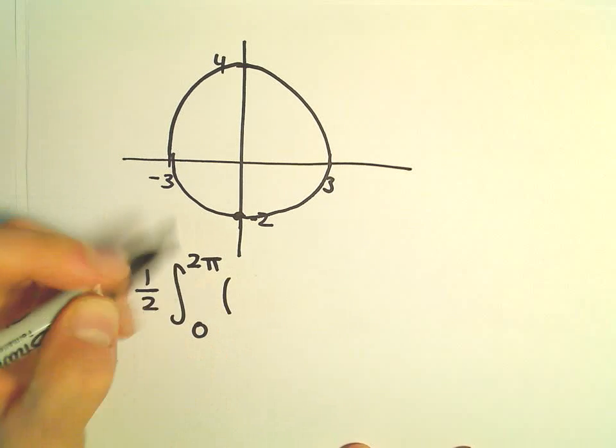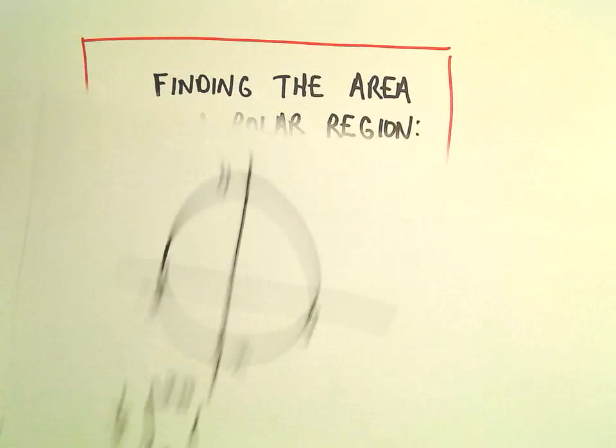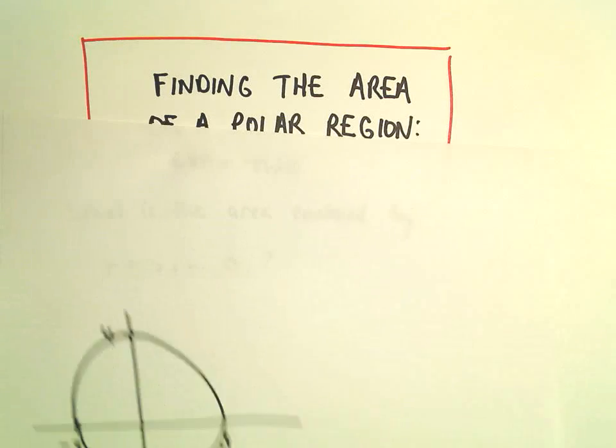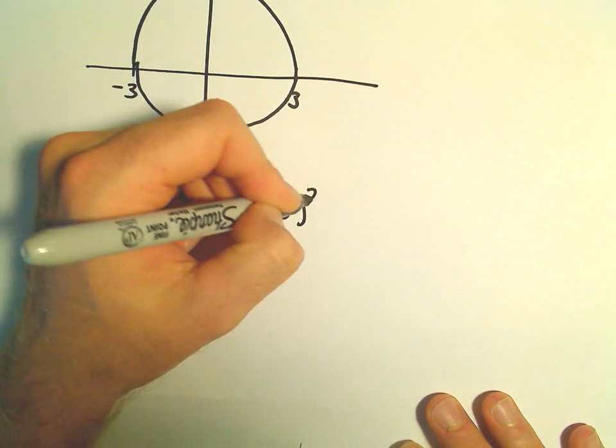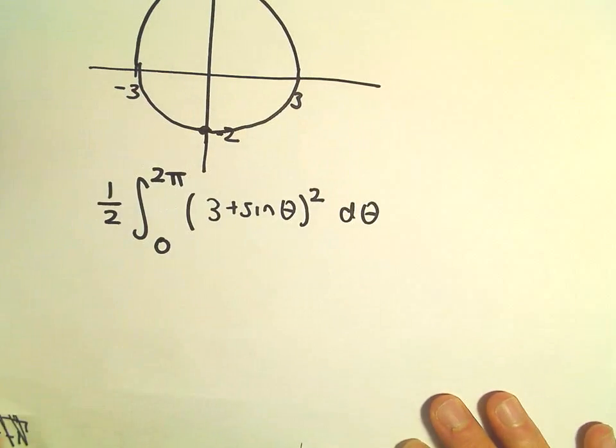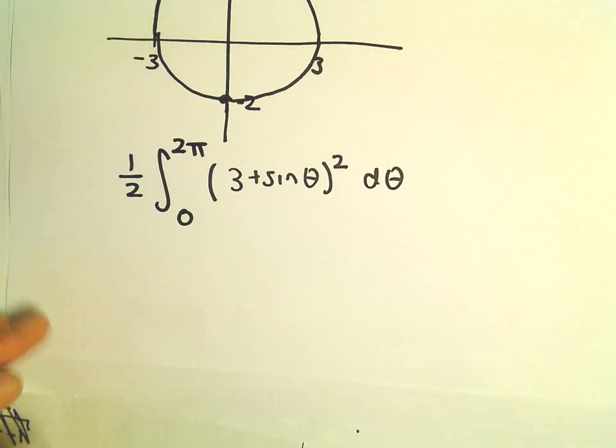So we've got r squared. r, we said, was just 3 plus sine theta. So we have 3 plus sine theta quantity squared d theta. And now we get to just integrate this lovely function.